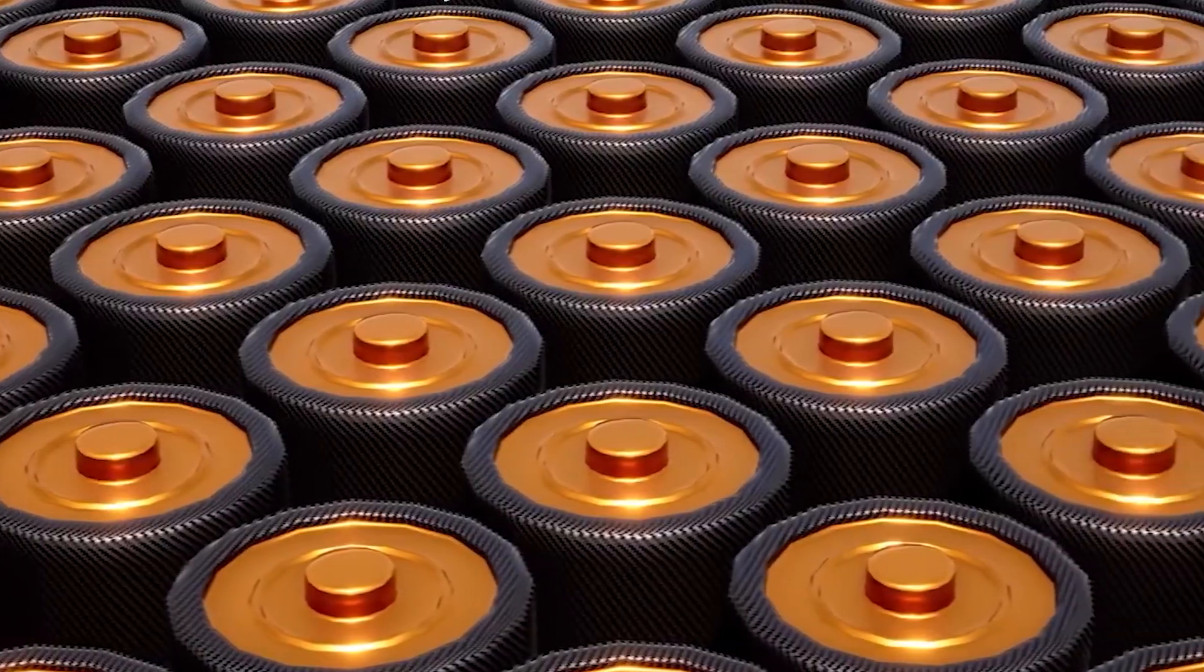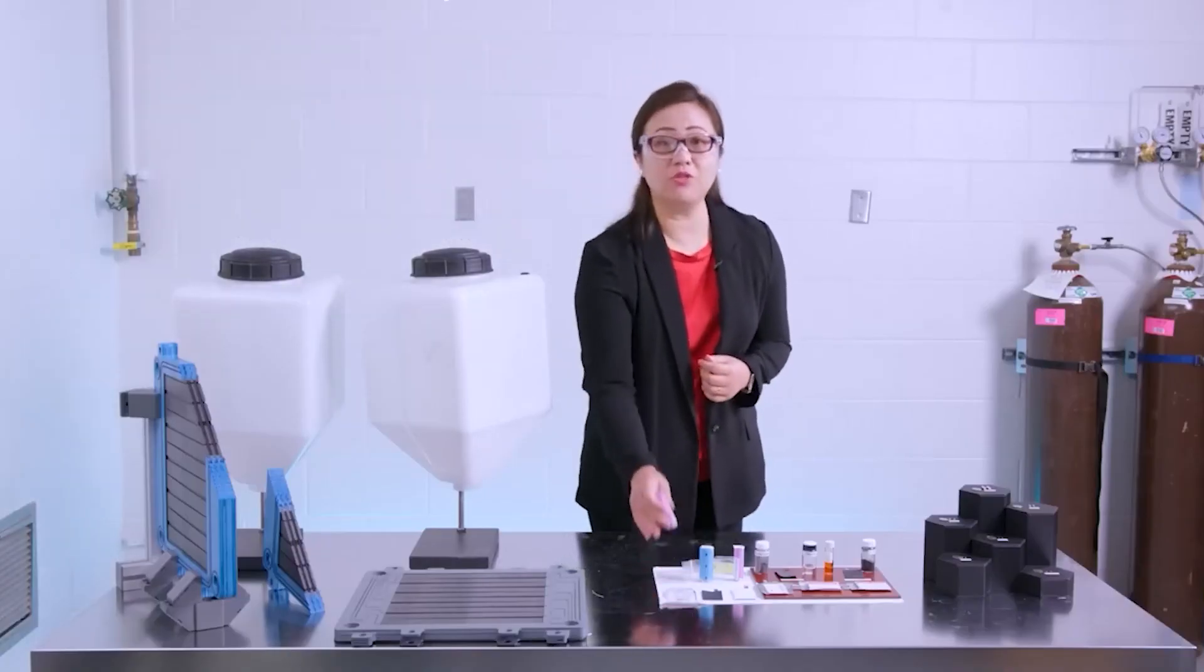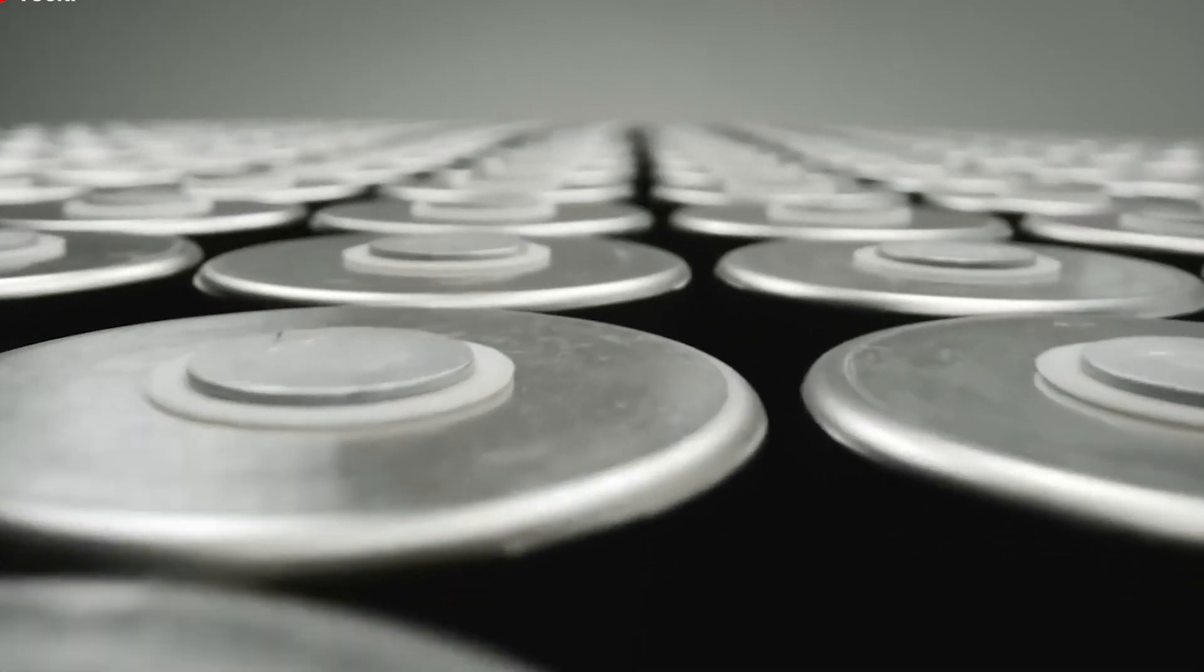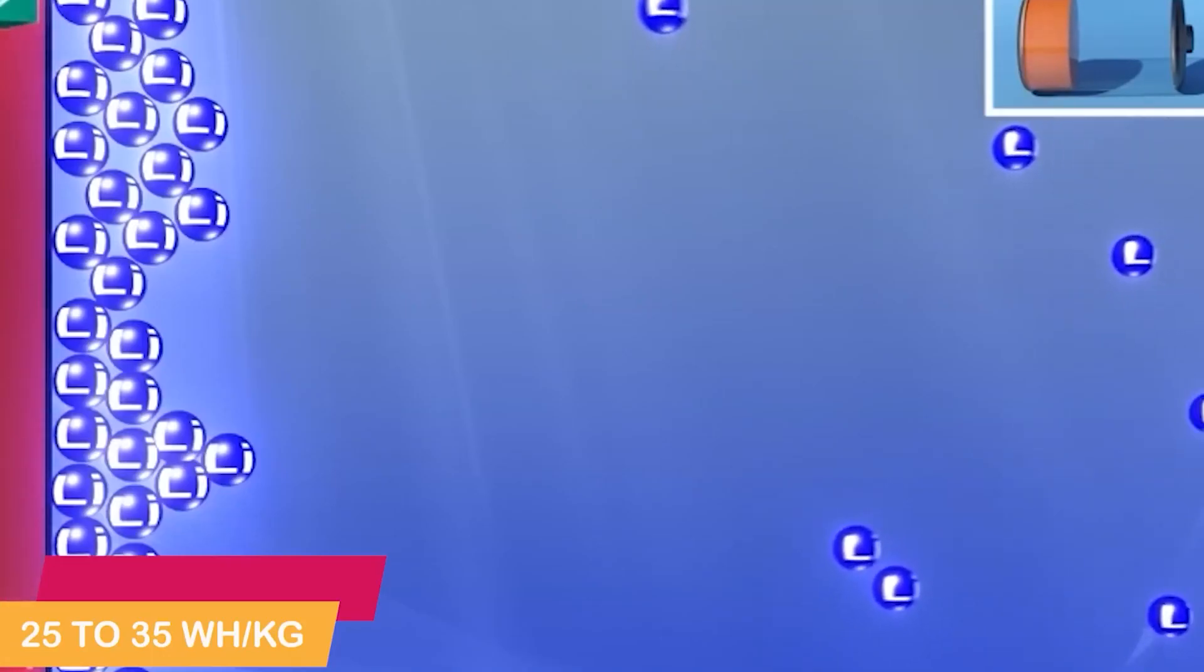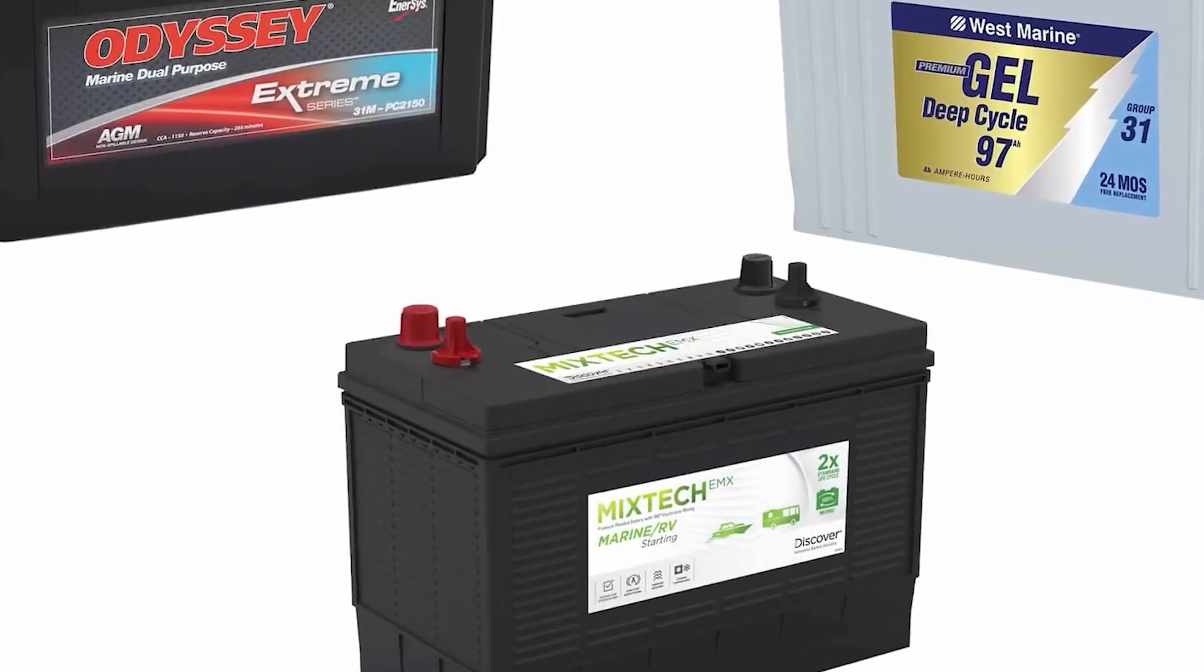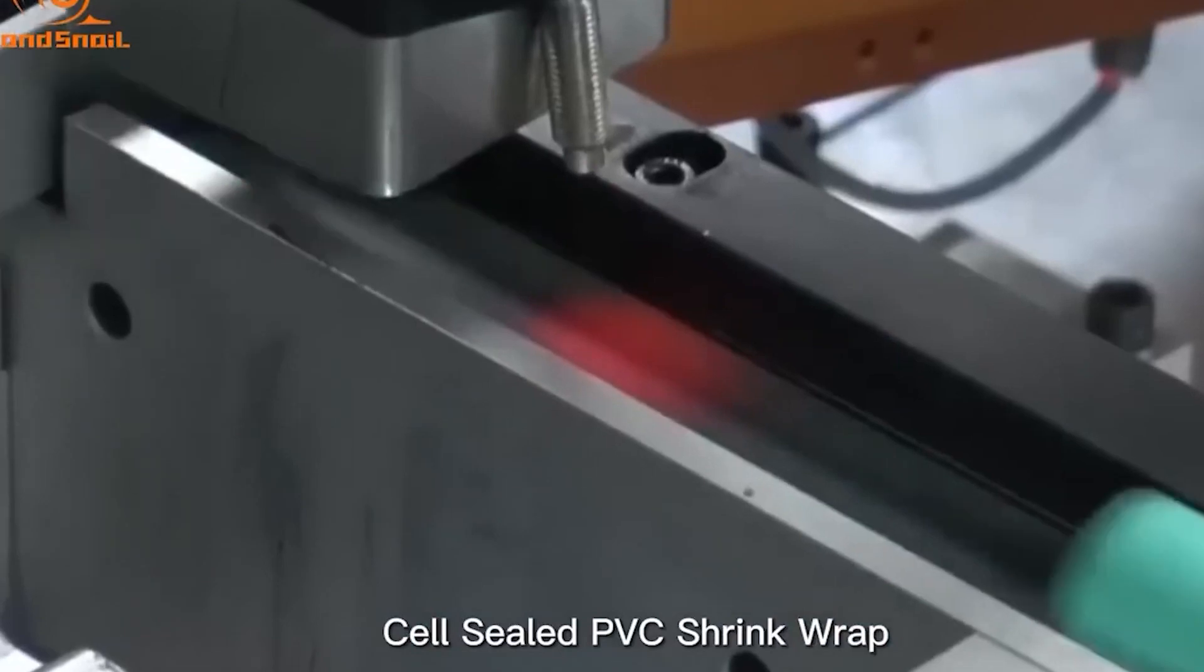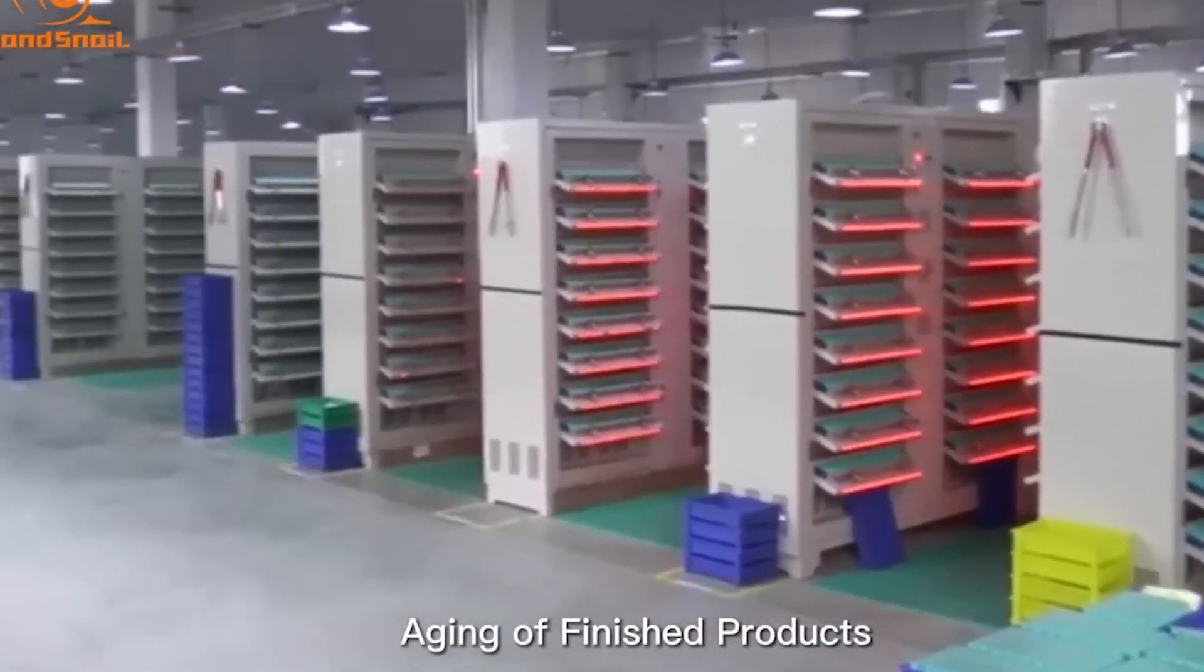What makes saltwater batteries truly impressive is their high energy density. With an energy density of 100 watt-hours per kilogram, saltwater batteries pack a powerful punch. In comparison, lead-acid batteries have a much lower energy density of 25 to 35 watt-hours per kilogram, making saltwater batteries approximately four times more efficient. This combination of low cost and high quality positions saltwater batteries as a viable option for future battery industry replacements.